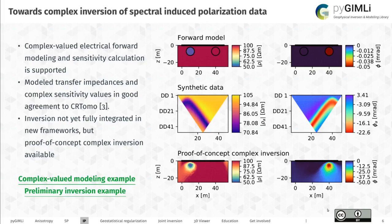Regarding IP: Maximilian Weigand has made a nice synthetic study. He compared the transfer impedances to the output of CeaTomo, the code by Andreas Kemner which is widely used in the IP community. The forward response and the complex sensitivity values are in good agreement, and we will now continue to work on the inversion part. There is a proof-of-concept inversion already available under the links here — it is ongoing research and not yet fully integrated in the new inversion frameworks, but it shows the potential and would also be applicable in three dimensions and usable with other frameworks such as the time-lapse framework.